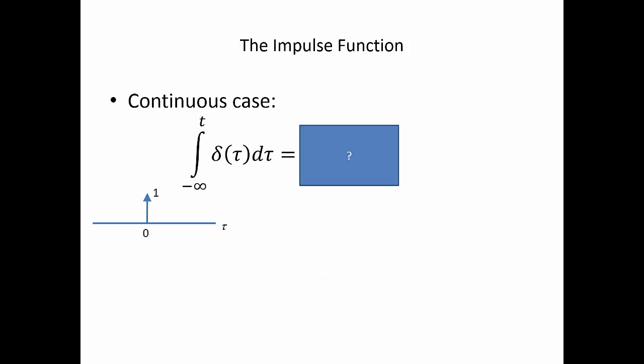Let's consider the case where we're now going to integrate our impulse function. But we're going to integrate it with the dummy variable tau. And we're going to integrate it from minus infinity up to some value t. And that value of t is going to vary. So let's think about that. If we integrate from minus infinity up to where the arrow is pointing right now, how much area do we have? 0.